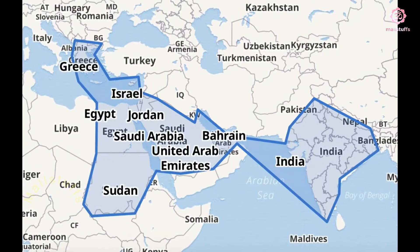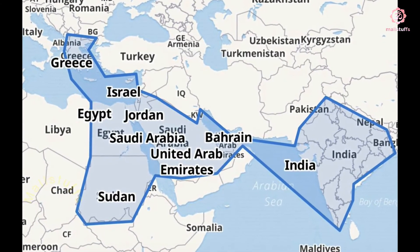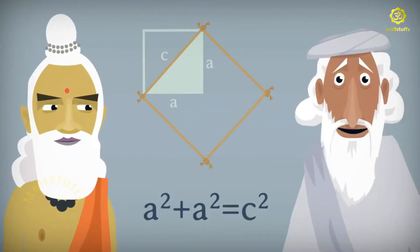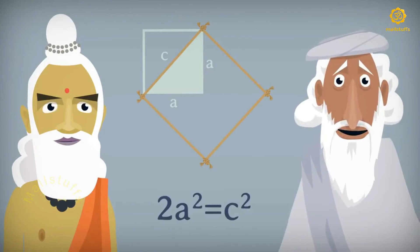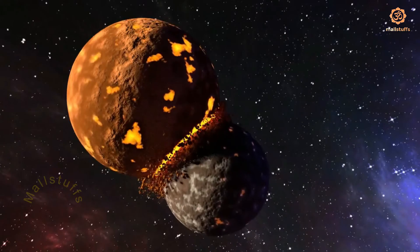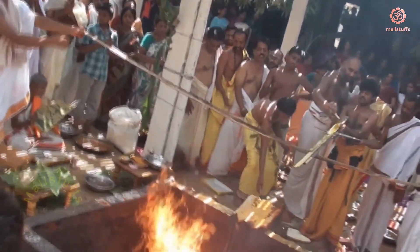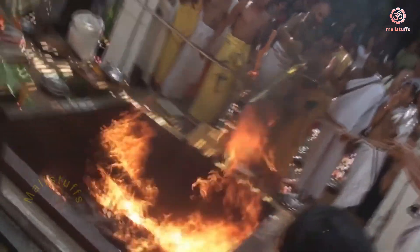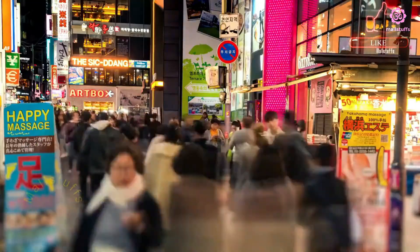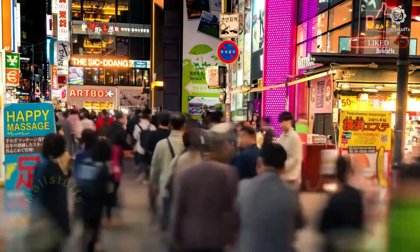Pythagoras learned his theorem during his visit to India but hid his source of knowledge. Even though the West is aware of the actual creator of Pythagoras theorem, for selfish reasons they are still reluctant to call it Bodhayana theorem. The reason why the Earth is heading towards destruction is because all inventions of the ancient world were dedicated to God with no intention of materialistic desire, while the entire modern world's discoveries are dedicated only to humans for becoming more attached to materialistic pleasures.